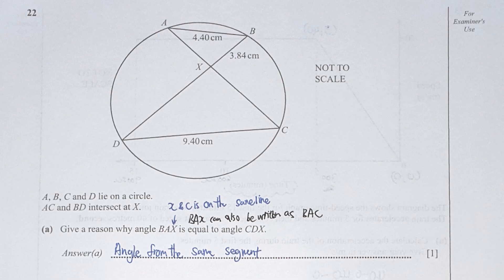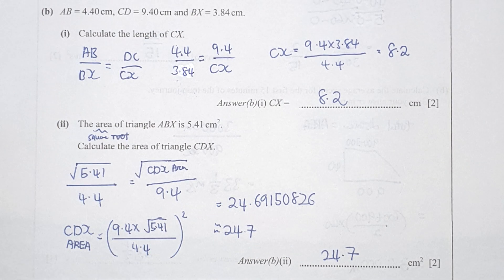Question 22: give a reason why angle BAX equals angle CDX — the reason is angles from the same segment. BAX can also be written as BAC. For section B, comparing values gives AB over BX equals DC over CX, and the final value of CX is 8.2.